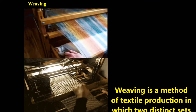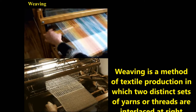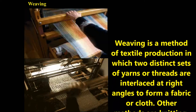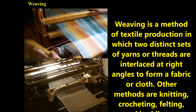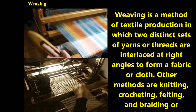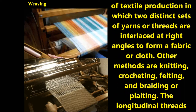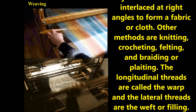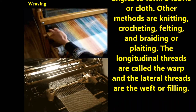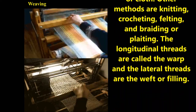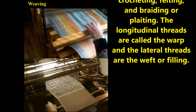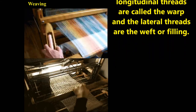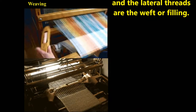Weaving is a method of textile production in which two distinct sets of yarn or threads are interlaced at right angles to form a fabric or cloth. Other methods include knitting, broaching, felting, and braiding. The longitudinal threads are called the warp and the lateral threads are the filling.